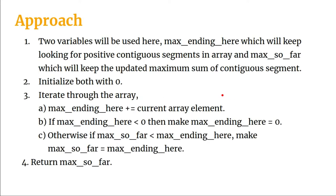The approach will be: we will have two variables. One will be max_ending_here, which will keep looking for positive contiguous segments in the array — whenever the sum is getting positive, that is a maximum. Another variable will be max_so_far, which will keep the updated maximum sum of the contiguous segment.